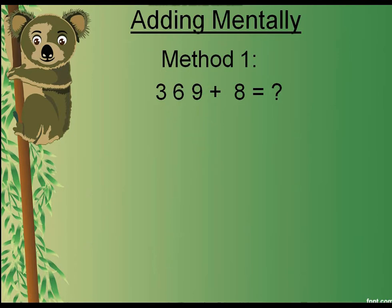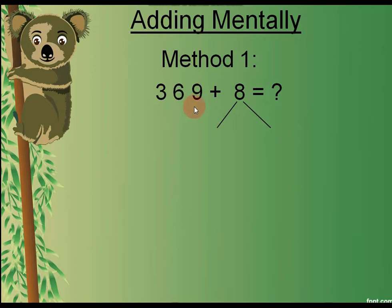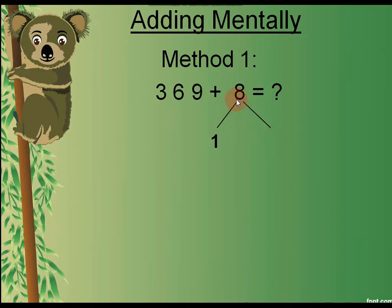The first method is: you can break the second number into two parts — that means you are going to make a number bond of 8. But you need to check the first number. In the first number, this is 369, so we will make the number bond of 8 accordingly. We write 1 here, because 69 and 1 makes 70, so that would be easy to add.